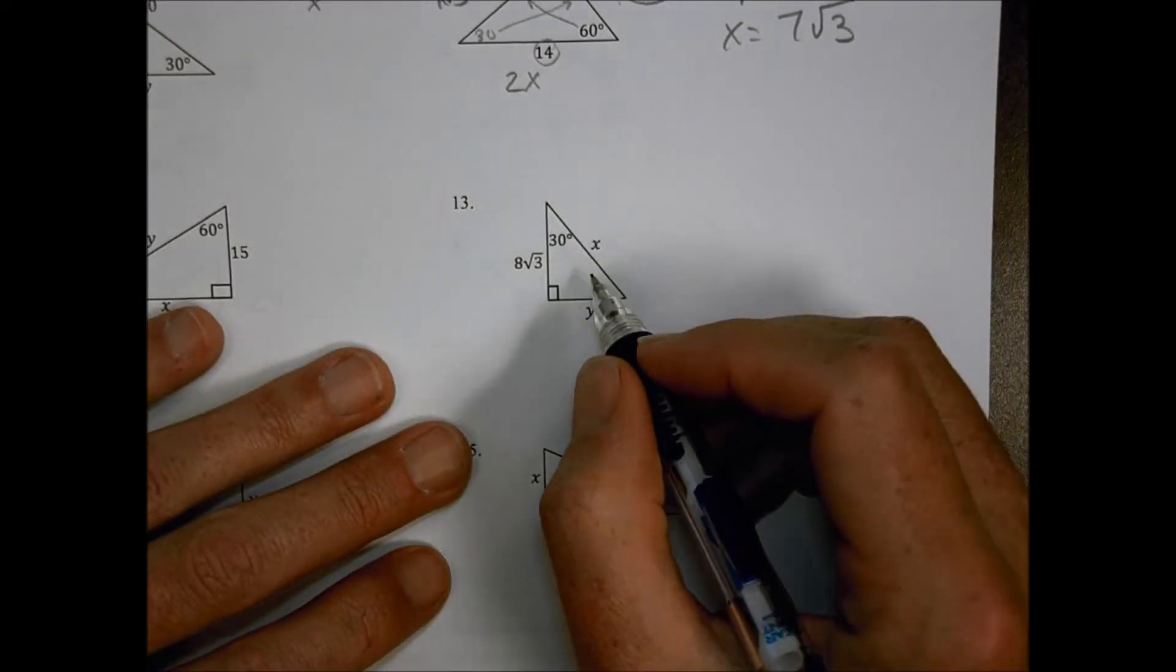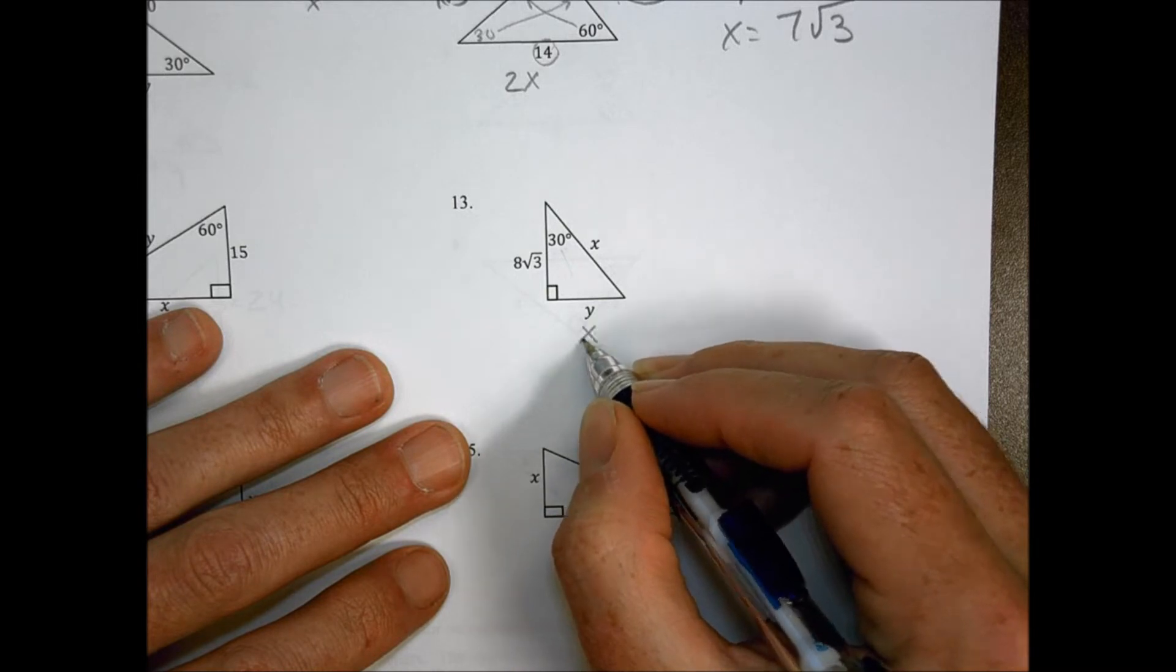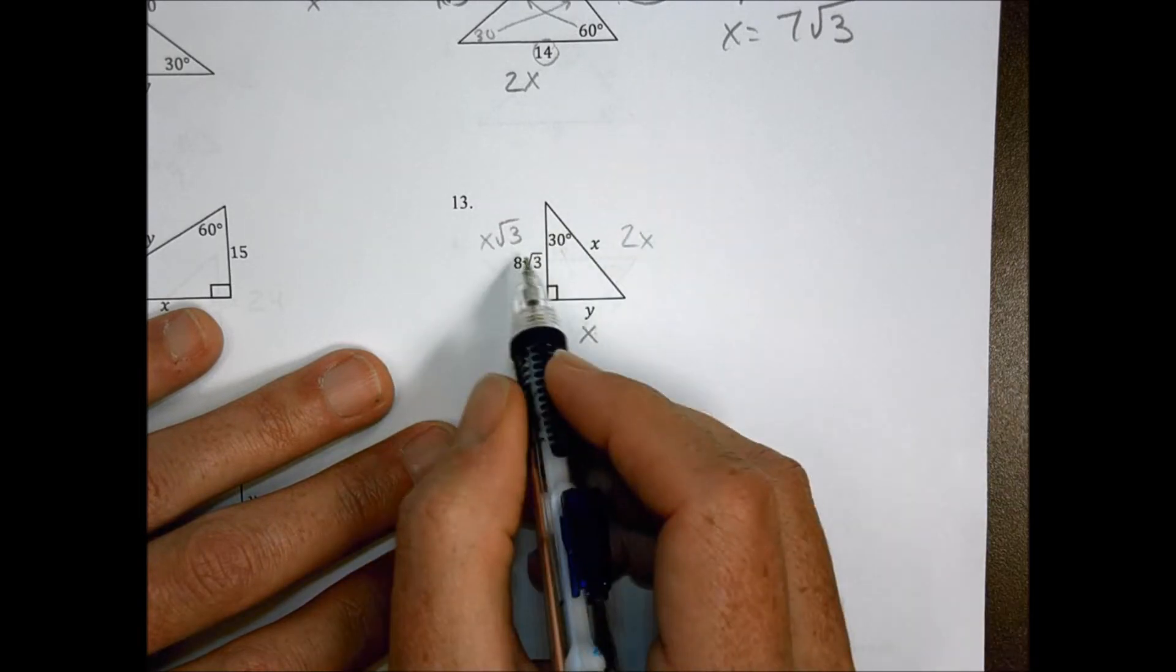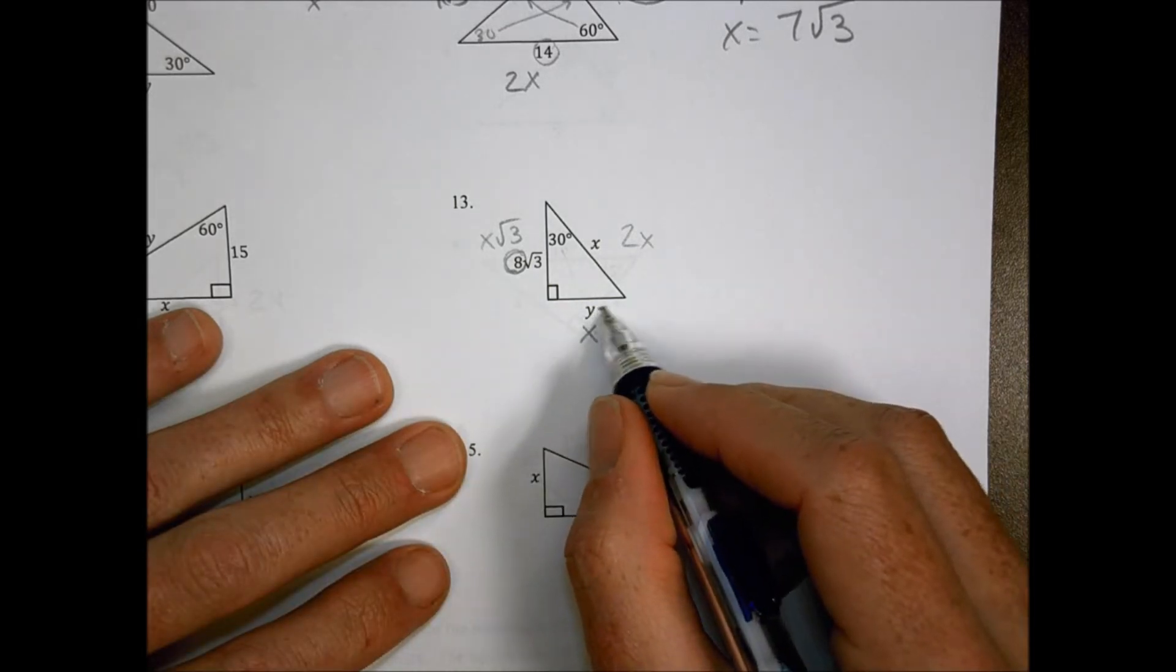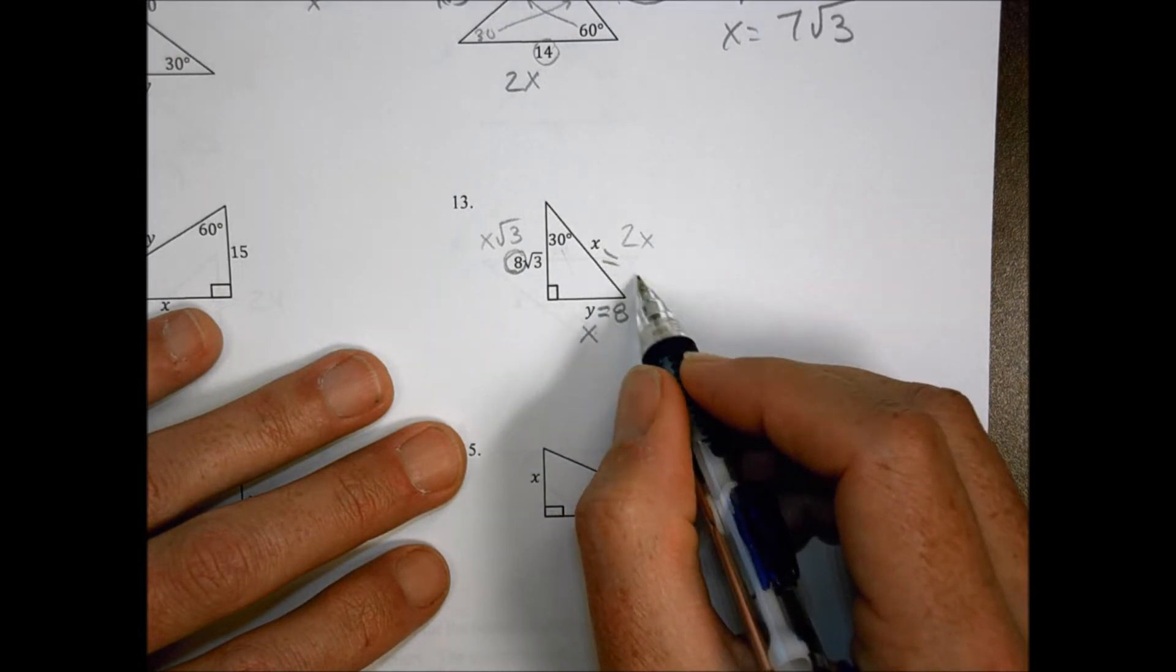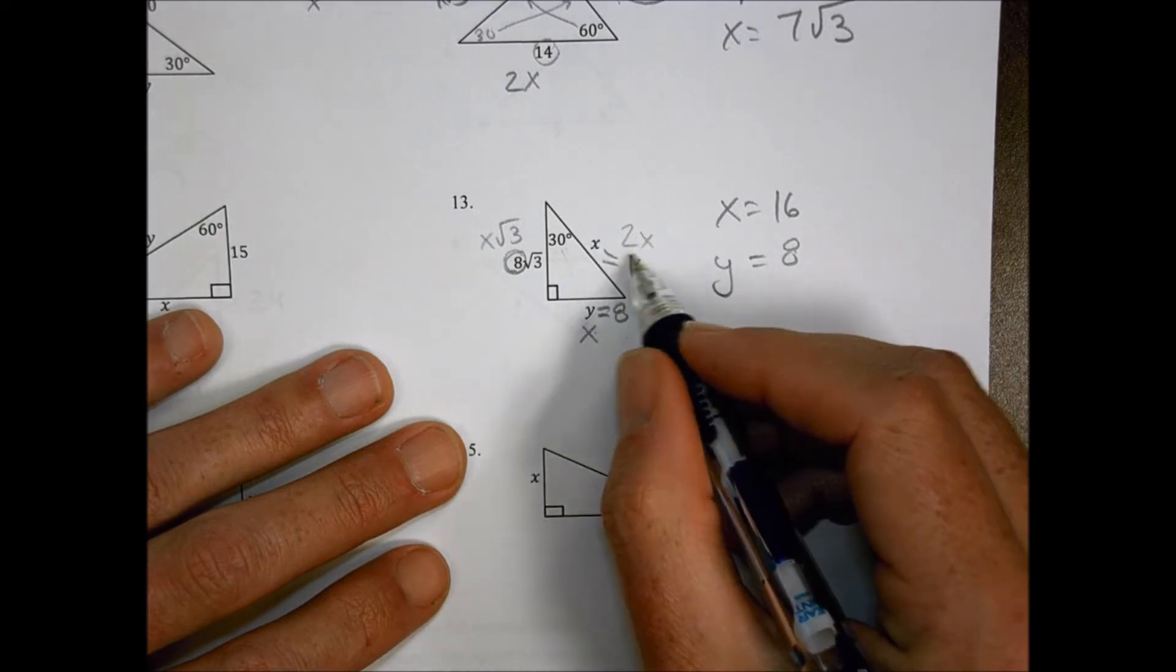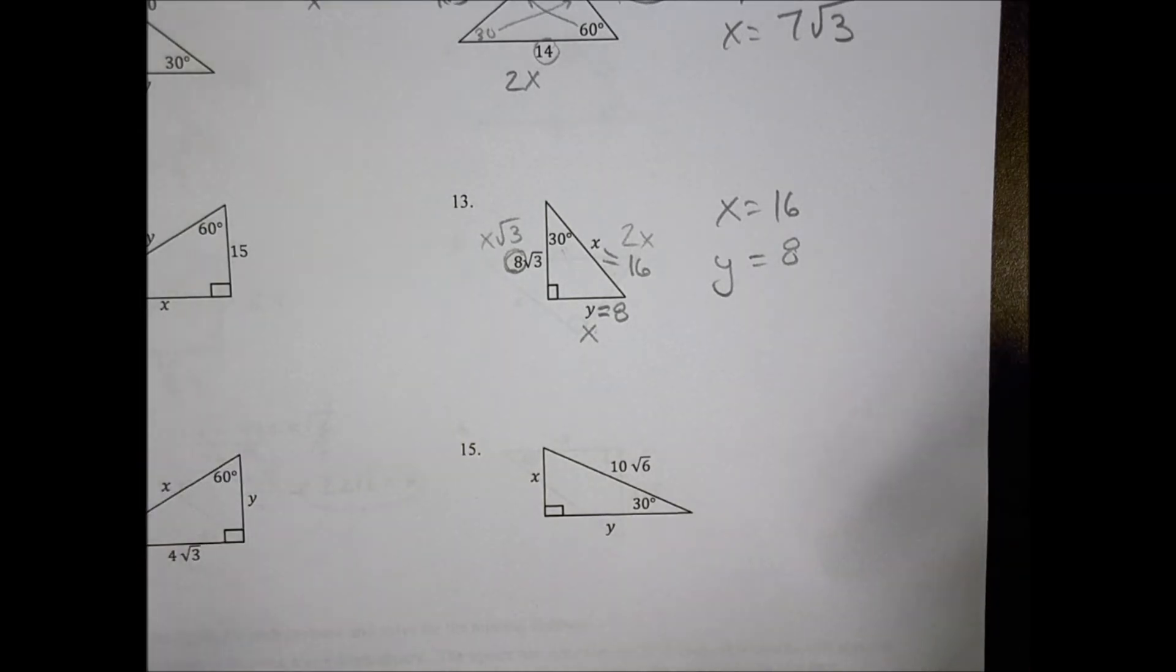Let's take a look at number 13. Across from the 30, that's what we would call our X value. Across from the hypotenuse, that becomes our 2X. And this becomes our X root 3. We can see in this problem here, they've given you the value of X. X, they said, was 8. So that means that Y is equal to 8. And that makes our X value equal to 8 times 2, which is 16. So X equals 16 and Y equals 8. It's just a little crazy because they change your letters around there.